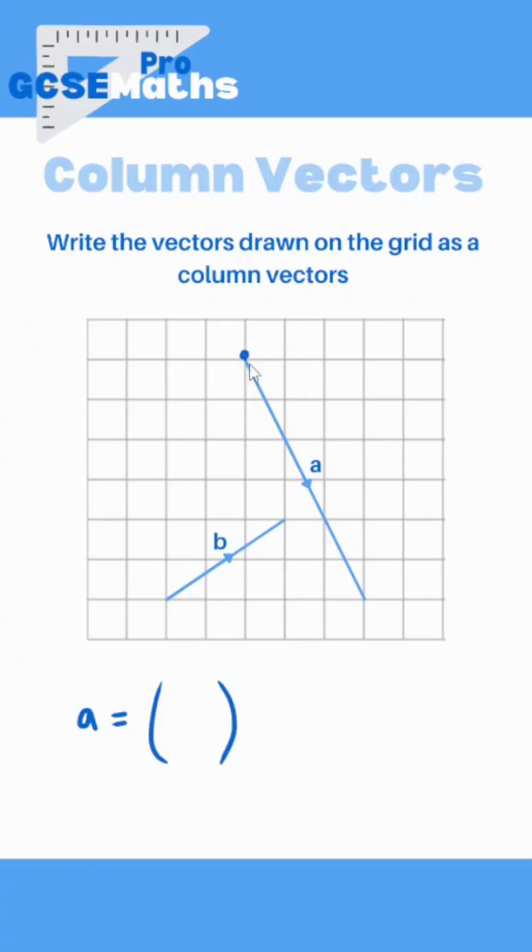So going across, I'm gonna start here. How many do I have to go across? We've got one, two, three. Three to the right. That means that it's gonna be a positive three. To the left means negative.